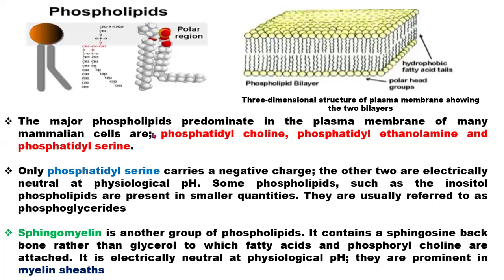In phosphatidylcholine, in addition to phosphoric acid, the phosphoric acid group is attached to a choline functional group. In phosphatidylcholine, three methyl groups are attached instead of hydrogen on the amino group. Phosphatidylserine carries a negative charge, while the other two are electrically neutral at physiological pH. Phospholipids such as the inositol phospholipids are present in smaller quantities and are usually referred to as phosphoglycerides.